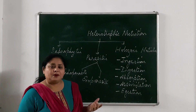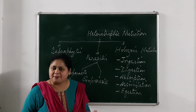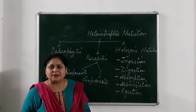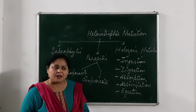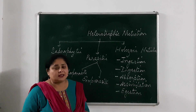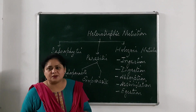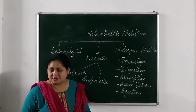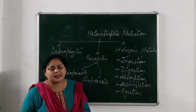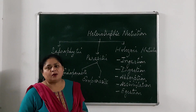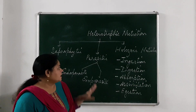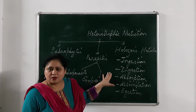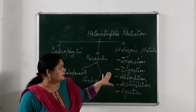Examples of animal parasites are many — there may be ticks, lice, and even mosquitoes are also parasites. There may be Ascaris, which lives inside the stomach of a human being. This is known as the parasitic mode of nutrition.